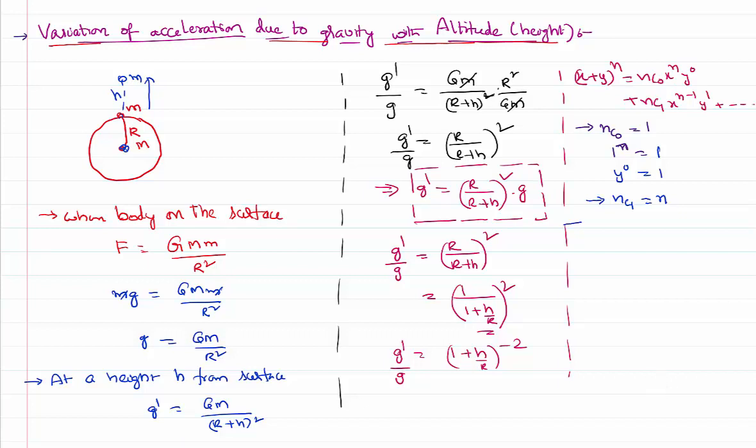Taking this into consideration, if I rewrite my equation, g dash by g is nC0 which is 1, x power n which is 1 power minus half equals 1, y power 0 which is h by R power 0 also equals 1. Plus the second term: nC1 is n, and in our case is minus 2, x power n minus 1, 1 power minus 2 minus 1, and then y power 1, that is h by R.